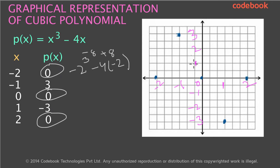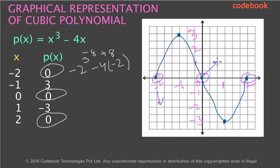If you connect these dots, you will have a curve something like this. As you observe, it intersects the x-axis at three different points, so this polynomial has three zeros. The zeros are minus 2, 0, and plus 2. So there are three zeros for this cubic polynomial.